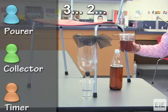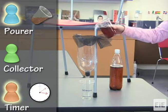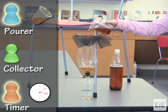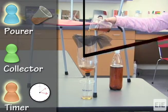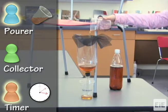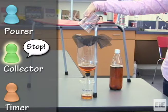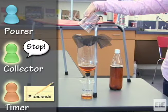On the count of three, the pourers empty their contaminated water cups while the timers begin counting seconds using the clock or stopwatch. The collectors announce to the group when the collected water reaches the line, and the timers observe and record the elapsed time.